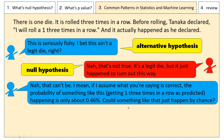John says, "That can't be. If I assume what you're saying is correct, the probability of something like this happening is only about 0.46%. Could something like that just happen by chance?" John is using probability theory to make a logical argument — if Taylor's claim is correct, then something like this would only happen with a probability of about 0.46%.